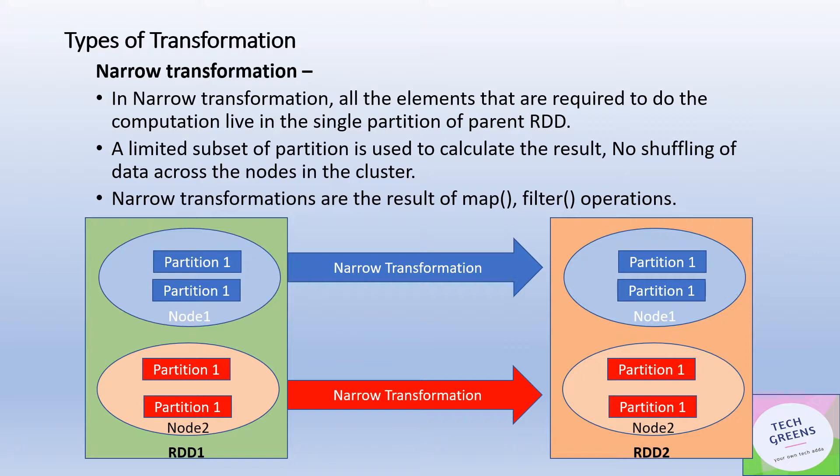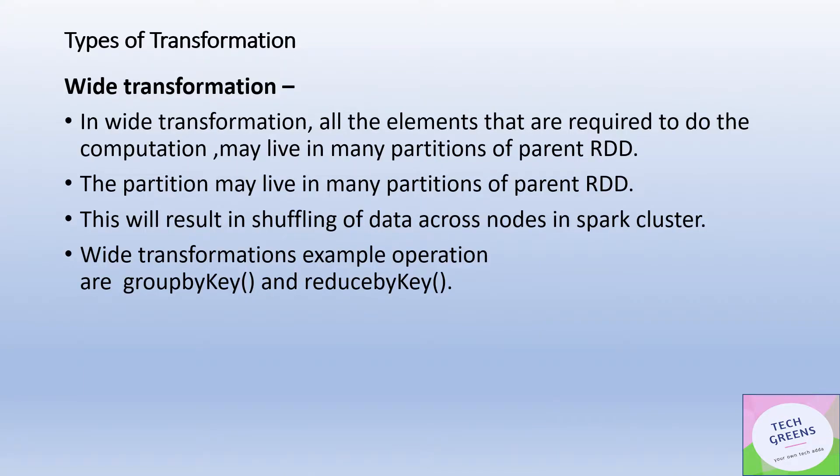Now let's see what are wide transformations. Wide transformations are obviously opposite to narrow transformations. Here the data is moved or shuffled across the nodes in the cluster. This may happen because the computation or transformation that we're trying to apply on different partitions may live on different nodes in the cluster. The partitions may live in many partitions of the parent RDD, which results in the shuffling of data across the nodes. Some examples of wide transformations are groupByKey and reduce.